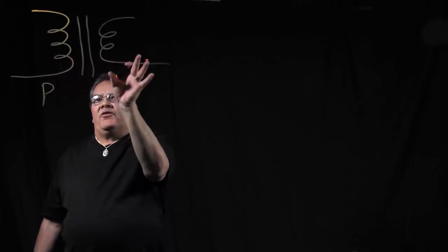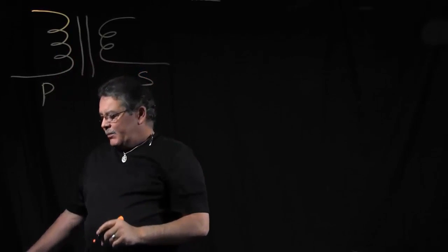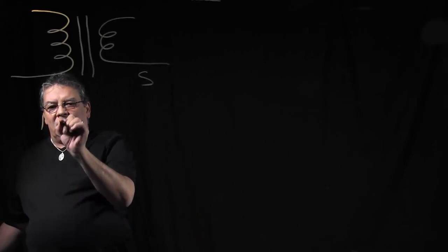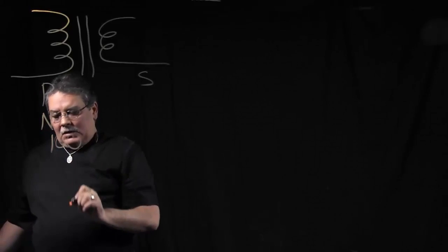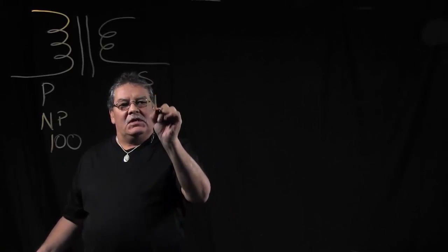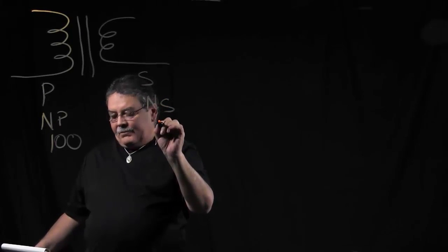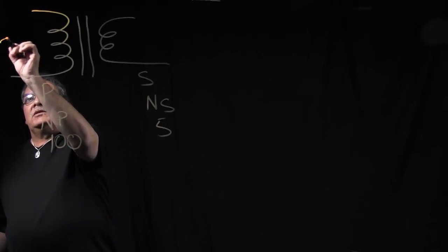So these are not totally accurate as far as the turns ratio, but in this situation, our primary has a number of turns, NP, is 100. And the number of turns in the secondary, NS, is 5. We're going to start off with a voltage of 240 volts.